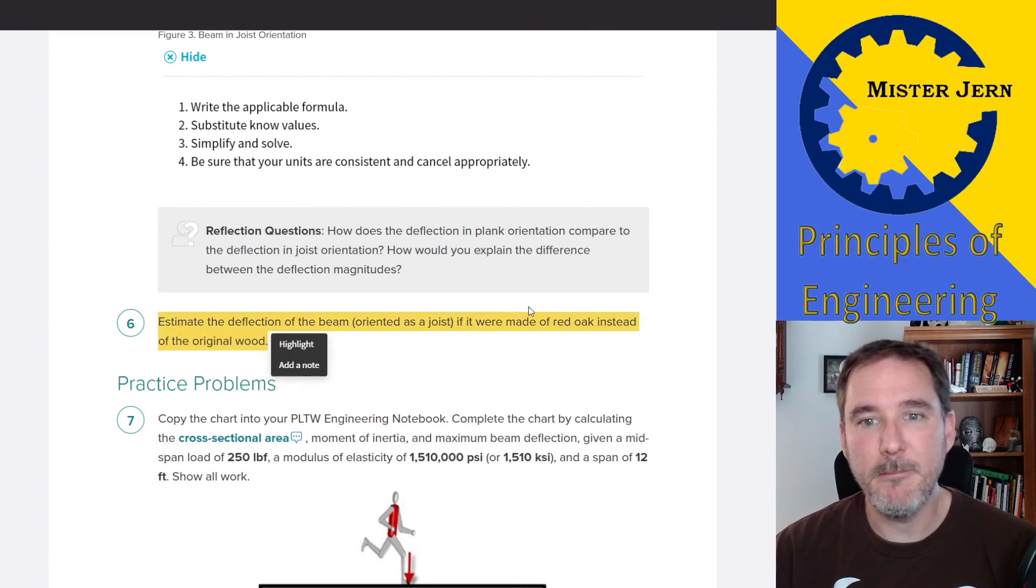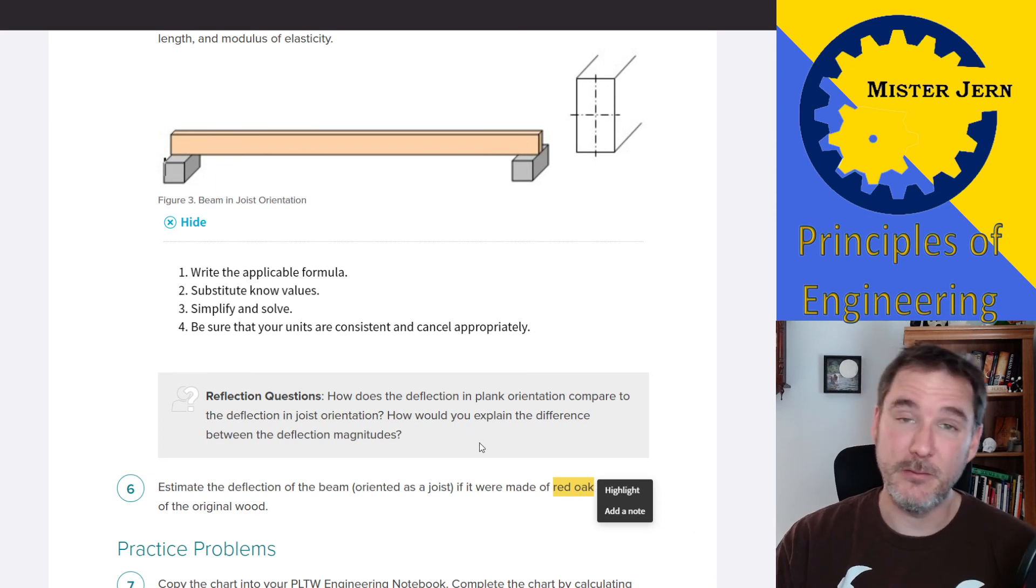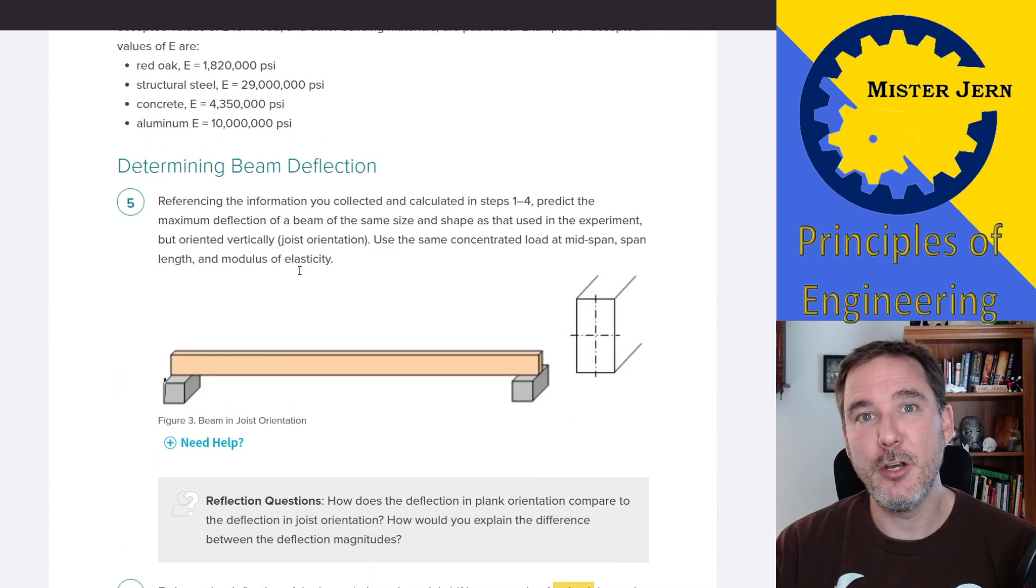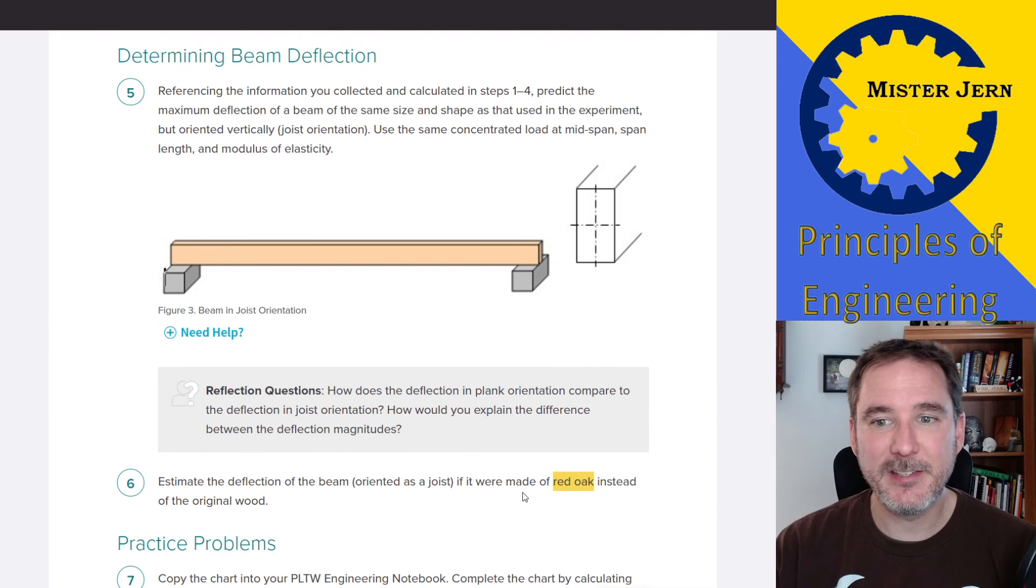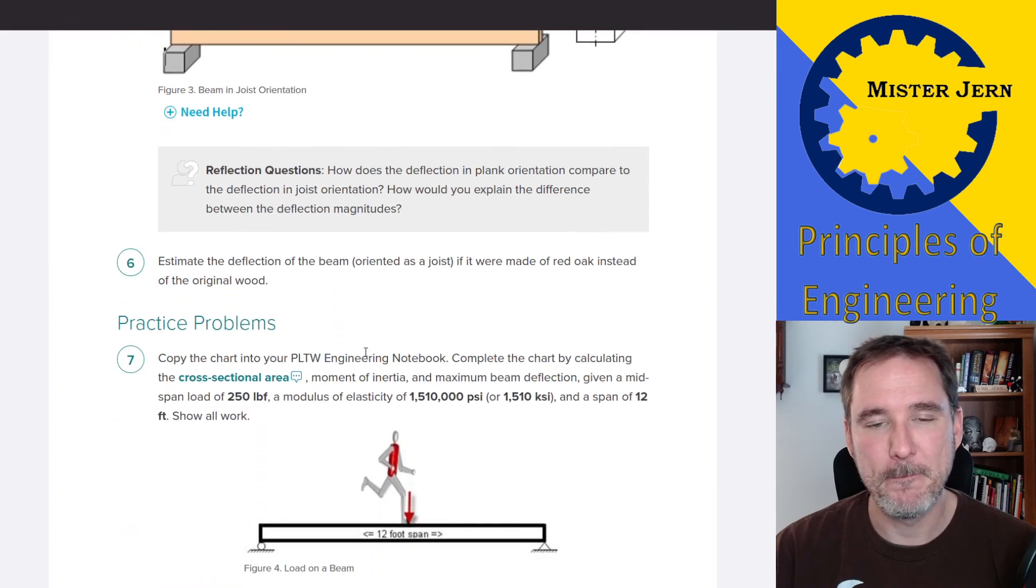Step six: you're going to estimate the deflection of the beam oriented like a joist, but instead of being made of the wood that you used, you're going to use red oak instead, which means your modulus of elasticity is going to be different. So in step five, the moment of inertia changed, but you used the modulus of elasticity that you calculated from step four. In step six, you're going to use the same moment of inertia from step five, but now you're going to use the modulus of elasticity for red oak, which is just right here. That's the modulus of elasticity for red oak. So you're going to use that with this moment of inertia, and everything else is the same.